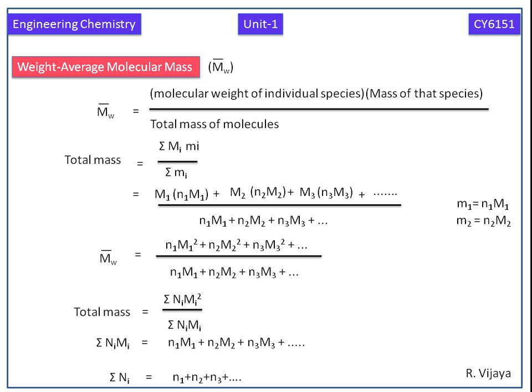Weight average molecular mass is determined by the light scattering techniques and ultracentrifugation techniques. Weight average molecular mass is always greater than the number average molecular mass. Thank you.